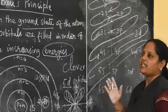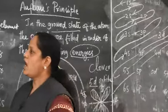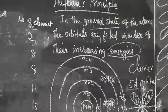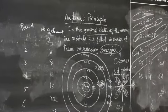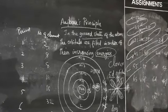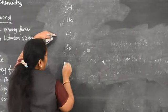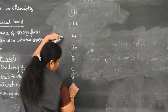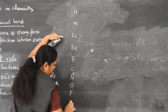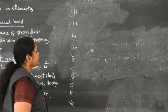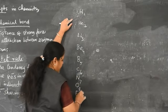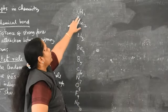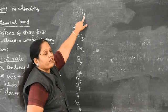Now let's write some examples. The first ten elements: hydrogen (1), helium (2), lithium (3), beryllium (4), boron (5), carbon (6), nitrogen (7), oxygen (8), fluorine (9), neon (10). We will write the electronic configuration for each using the Aufbau principle.